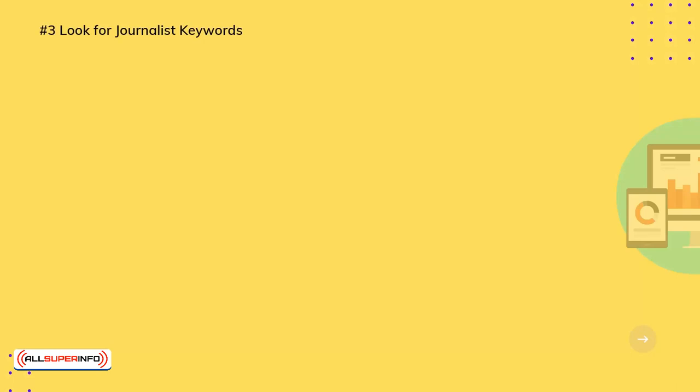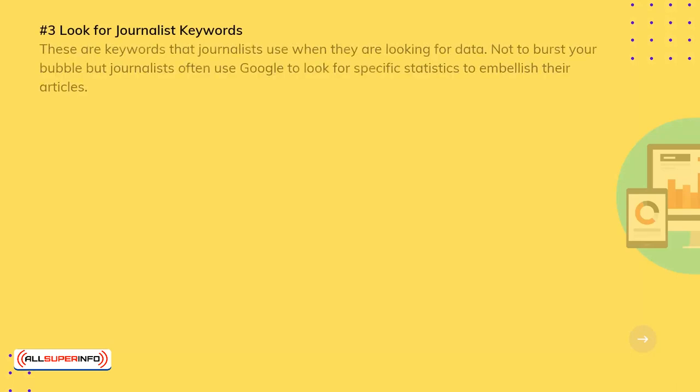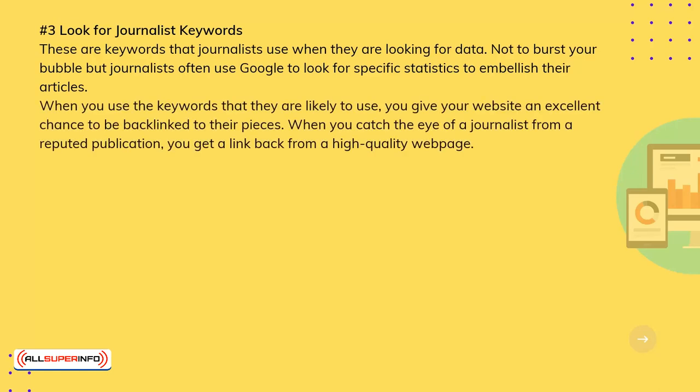Number 3: Look for Journalist Keywords. These are keywords that journalists use when they are looking for data. Journalists often use Google to look for specific statistics to embellish their articles. When you use the keywords that they are likely to use, you give your website an excellent chance to be backlinked in their pieces. When you catch the eye of a journalist from a reputed publication, you get a link back from a high-quality webpage.